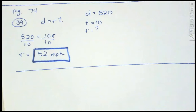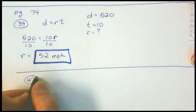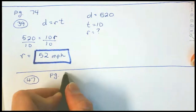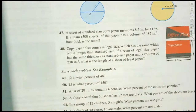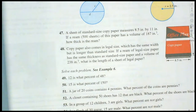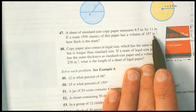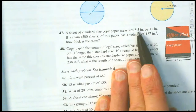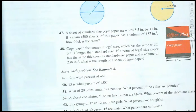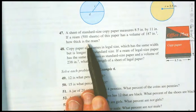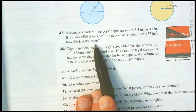Let's look at question 47 on page 75. A sheet of standard size copy paper measures 8.5 by 11. If the ream is 500 sheets, and this paper has a volume of 187 cubic inches, how thick is this ream? The volume is in cubic inches because that's a volume measurement. But our answer is going to be in a base unit because we want to know the thickness.